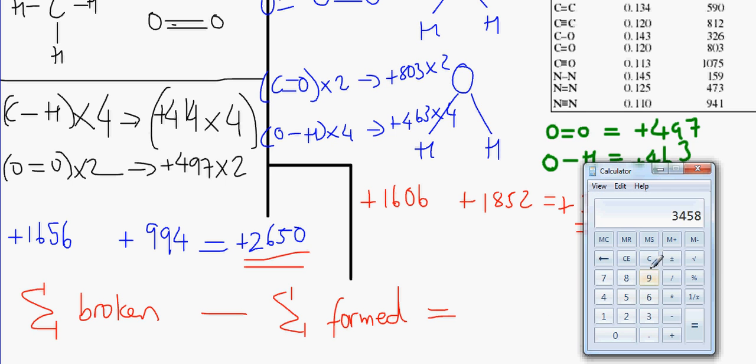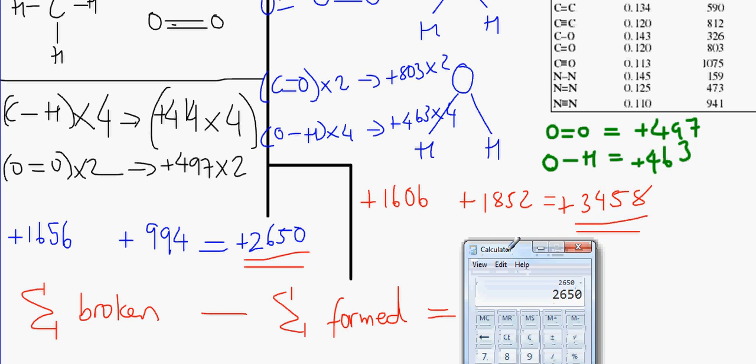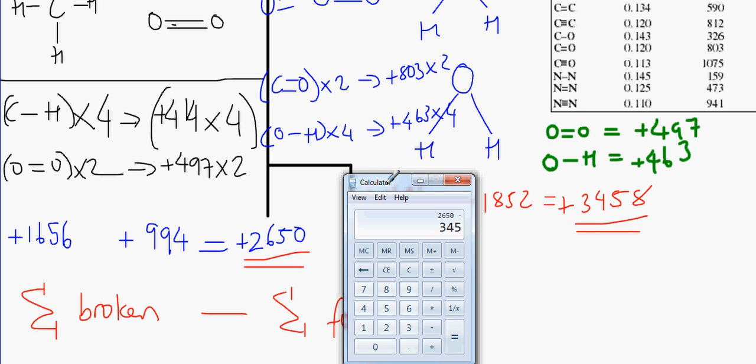So, what we need to do, we need to do 2650, because that is the sum of it broken minus 3,458 to make minus 808.